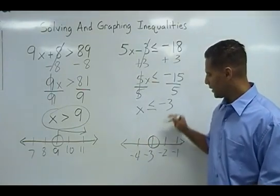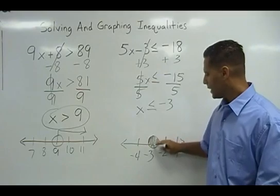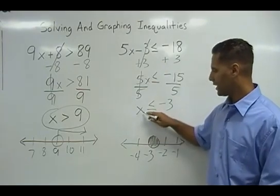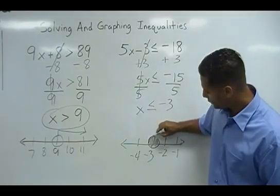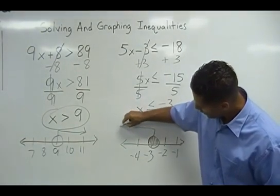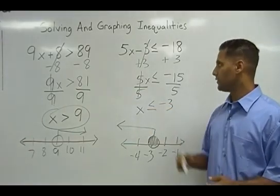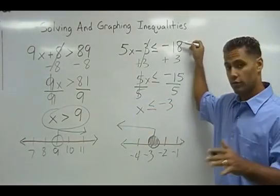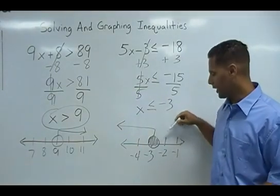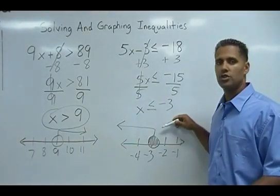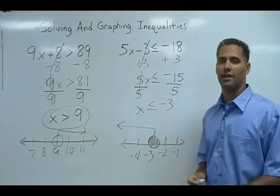But this time, because of the equal to sign, we have to shade this in solid. And because the values of x not only are equal to negative 3 but less than negative 3, we would say numbers that are less than negative 3 are to the left on our number line. So we would say that the solution for this inequality is x is less than or equal to negative 3. And this is a graph which is just a picture which shows that all values of x are equal to negative 3 or less than negative 3.